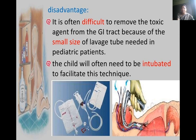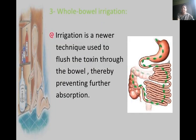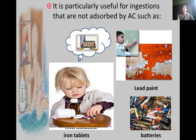The child will often need to be intubated to facilitate gastric lavage. Contraindications include alcohol, hydrocarbons, and acids. Whole bowel irrigation is a newer technique used to flush toxins through the bowel, preventing further absorption. Polyethylene glycol 500 ml per hour is given orally and continued until the rectal effluent is clear, in 4–6 hours. Serial abdominal radiography may be used to demonstrate effectiveness. It is particularly useful for ingestions not absorbed by activated charcoal, such as iron tablets, lead paints, and batteries.